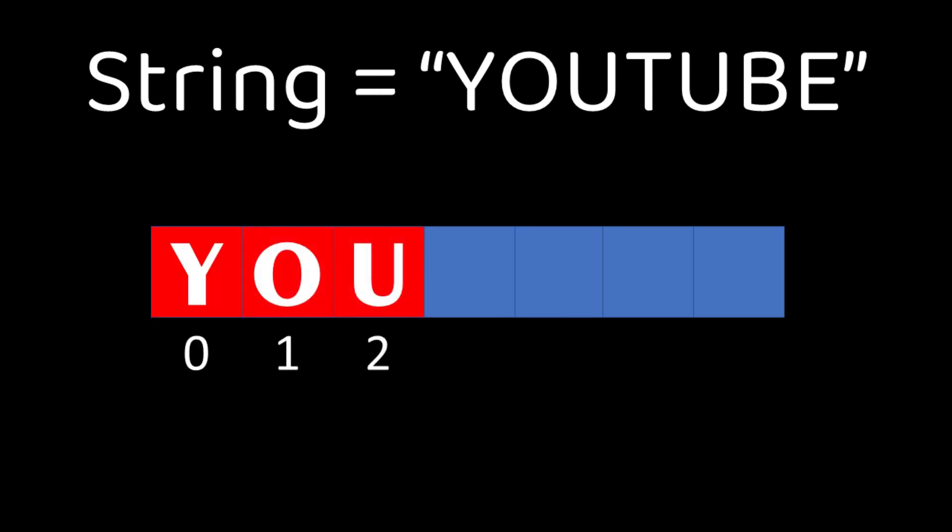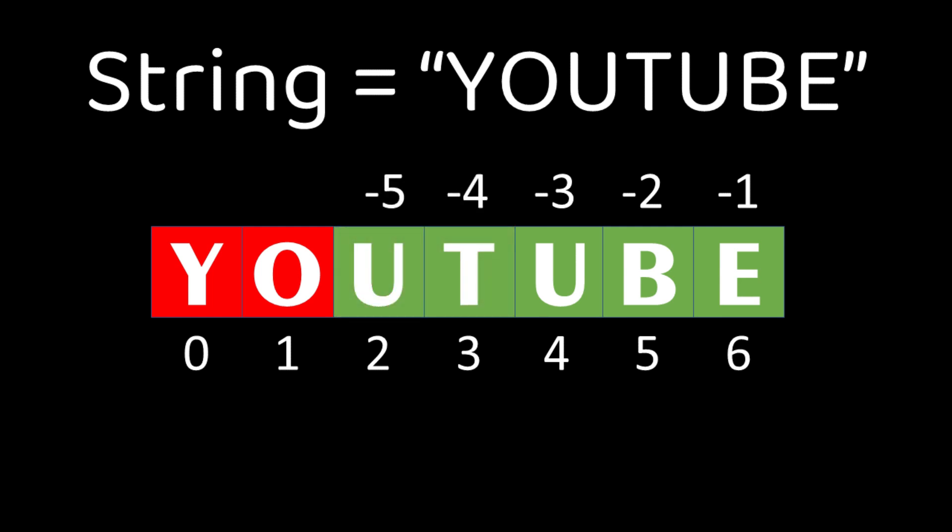Positive indexing starts from left with 0 and ends with length of string minus 1. And negative indexing starts from right with minus 1 and ends at left like this.